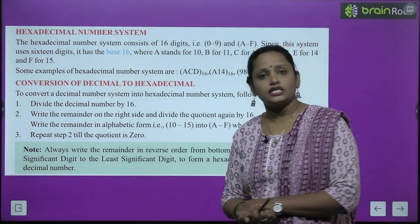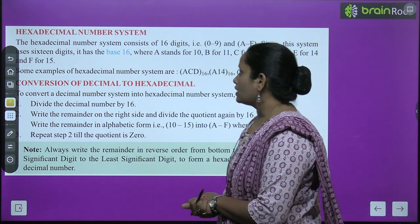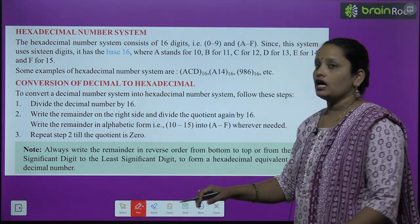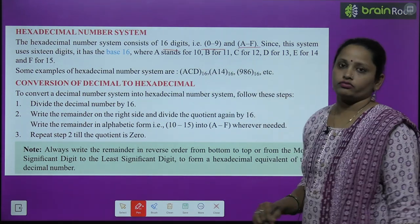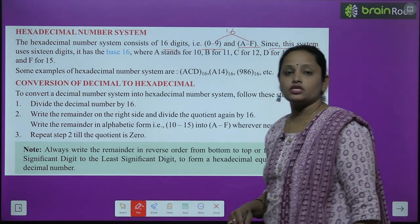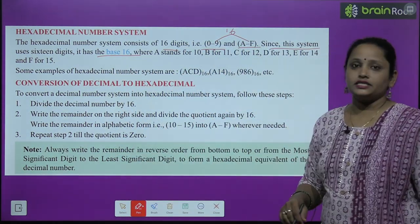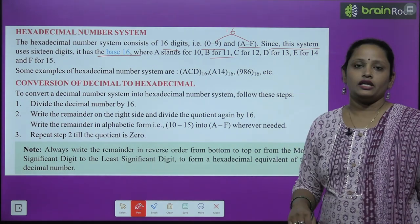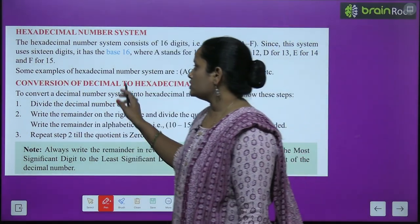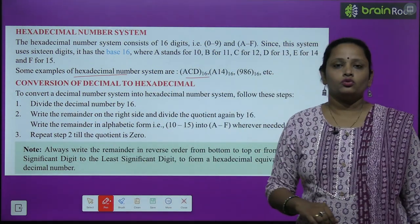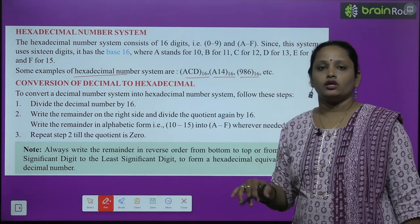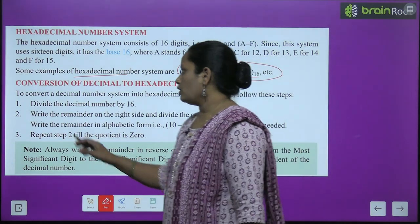Next comes the hexadecimal number system. The hexadecimal number system consists of 16 digits: 0 to 9 and A to F. Since there are 16 digits, its base is 16. Where A stands for 10, B for 11, C for 12, D for 13, E for 14, F for 15. Some examples of the hexadecimal number system are ACD base 16, A14 base 16, 986 base 16, and so on.